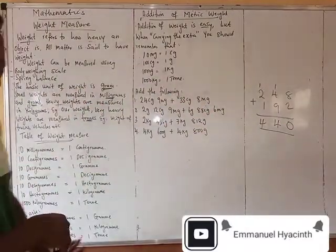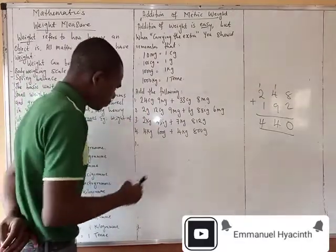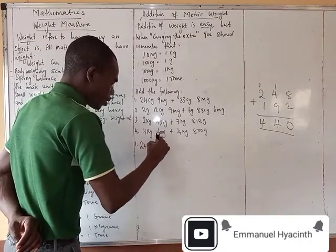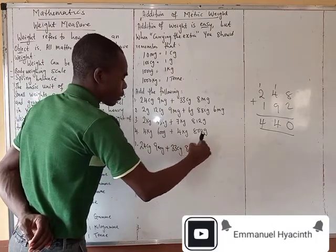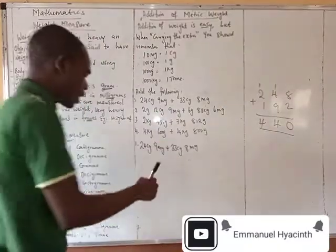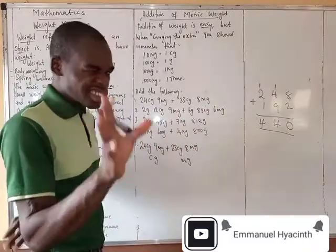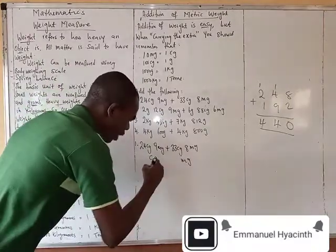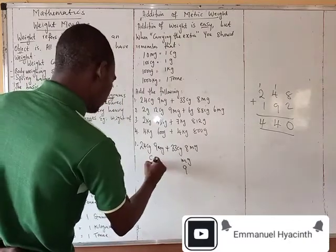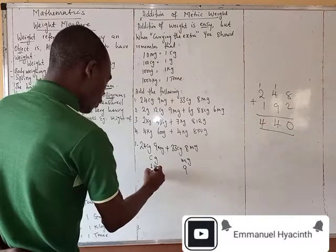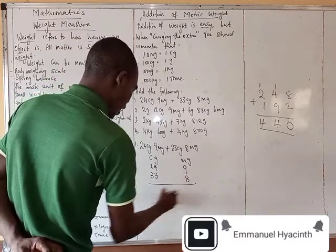Exactly the same thing as what we have here. So now, let us quickly get straight into it. Add the following: 24 centigrams 9 milligrams plus 33 centigrams 8 milligrams. Now if you want to add this, you have to bring it together. We have centigrams and milligrams. Here we have 24 centigrams 9 milligrams, then we have 33 centigrams 8 milligrams. We rule our line and add.